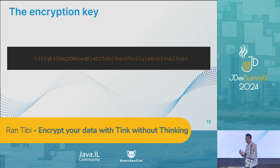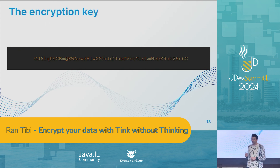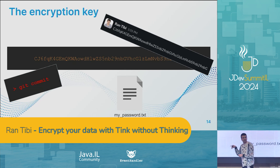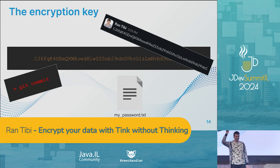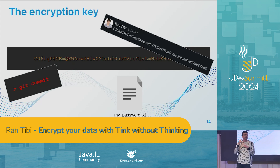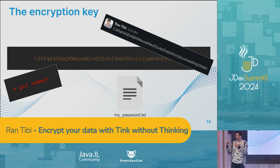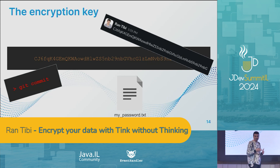That means all the analysts have to hold a copy of the encryption key. But how many of you have ever committed a secret, or maybe sent it over Slack, or saved it into a local unsecured file? Well, I have. And in this case, we cannot simply rotate it — it's not like rotating a key in GitHub. We actually have to read all the data, decrypt it, and re-encrypt it with a new key in order to make it safe again. Totally not fun — something we definitely want to prevent.